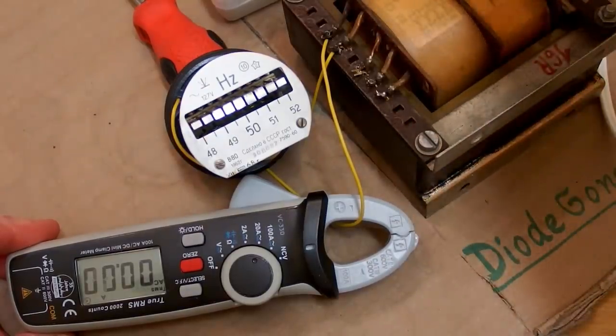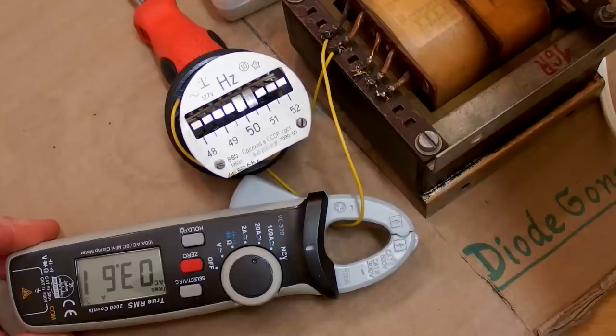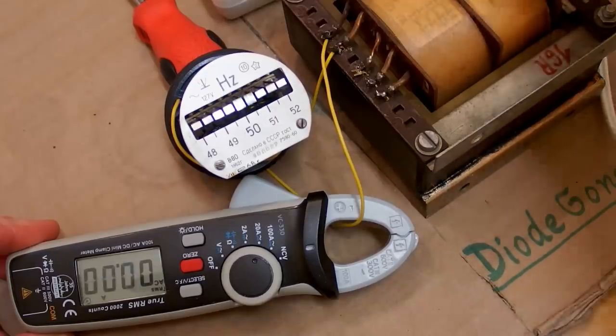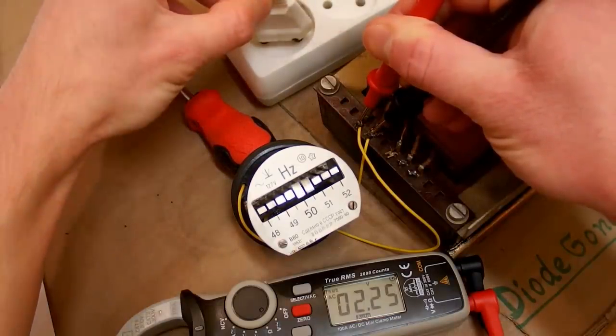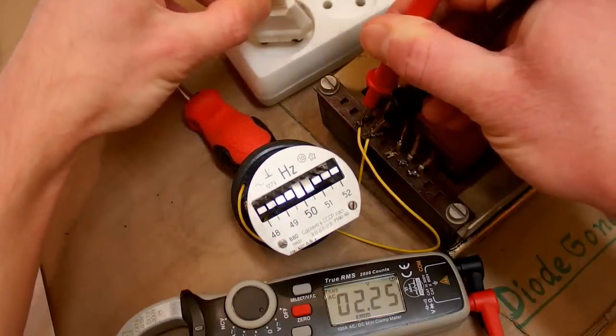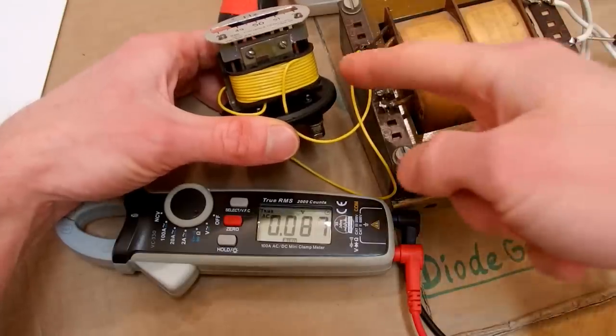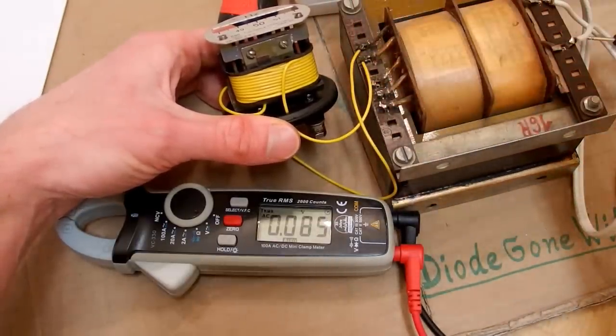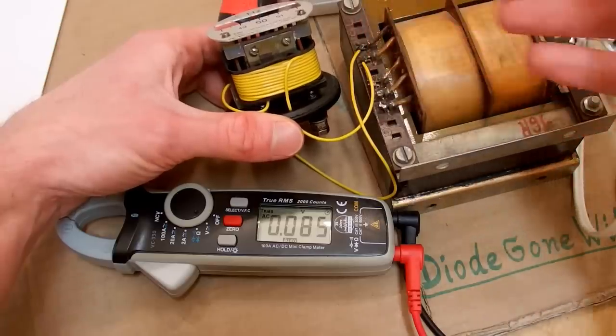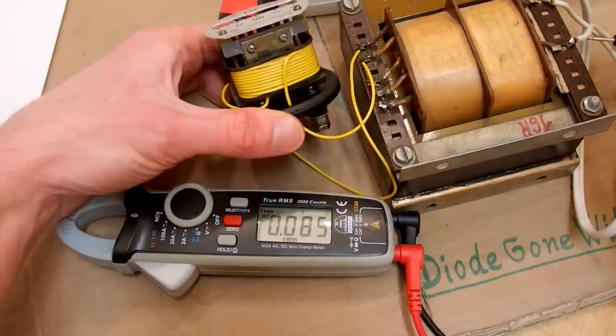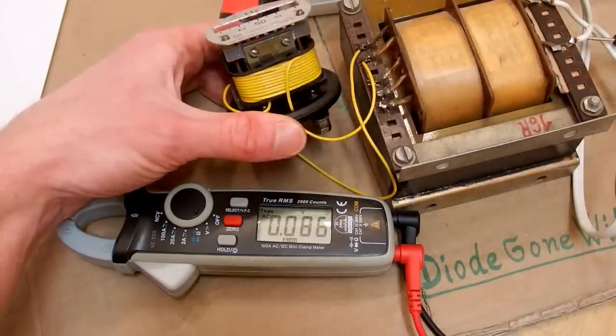Now let's measure the current. 3.6 amps. That's quite a lot. And the voltage is 2.2 volts. And there is 50 turns in it but of course the voltage per turn has to be higher now because the rubber fills most of the space and there is not much copper so it has a high resistance and it drops more voltage.